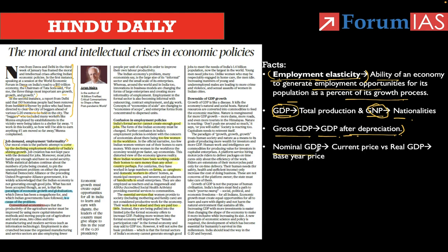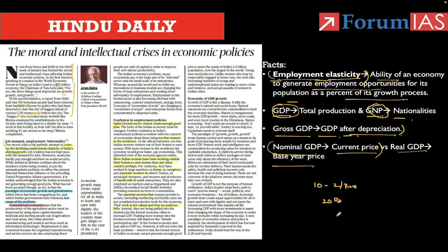Nominal GDP counts production at current market prices, and real GDP is calculated using base-year prices. For example, if today we produce 10 tomatoes at 2 rupees per piece, the nominal GDP would be 20 rupees. But if the base year price was 1 rupee per piece, the real GDP would be 10 rupees. This is how nominal GDP and real GDP are calculated every year.